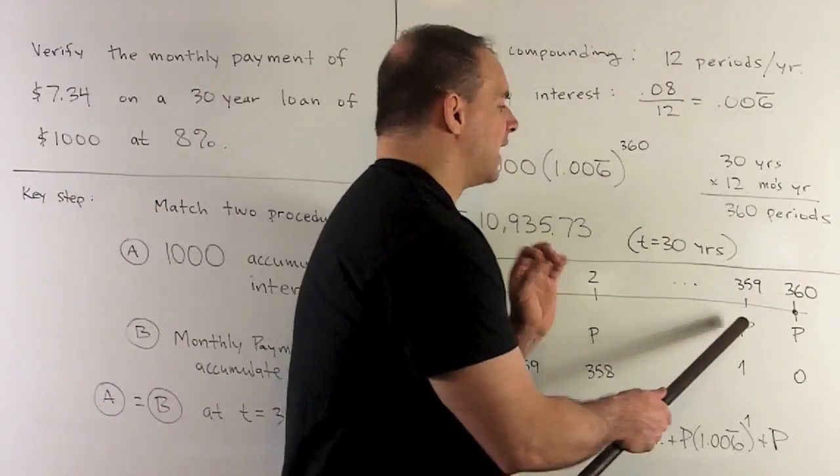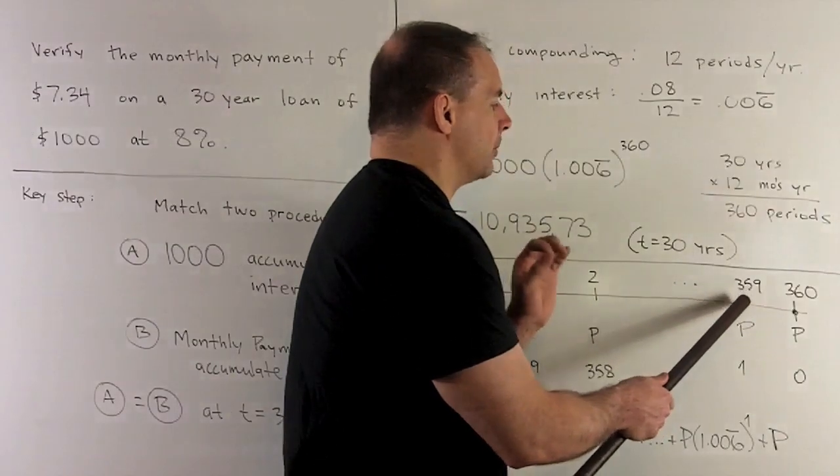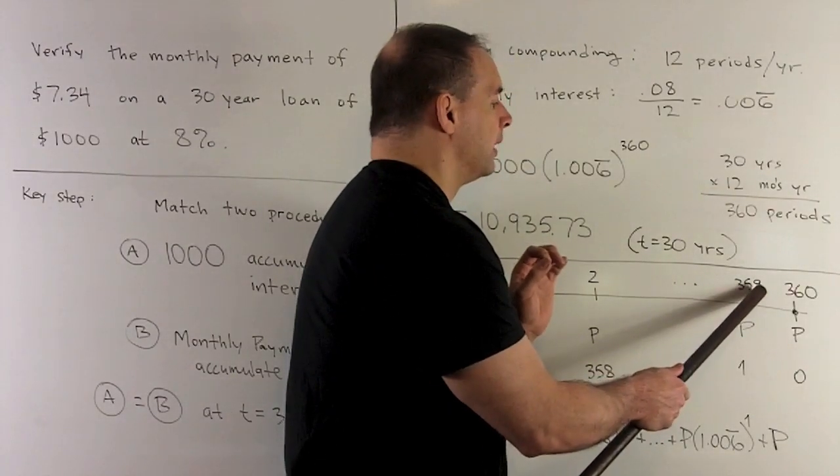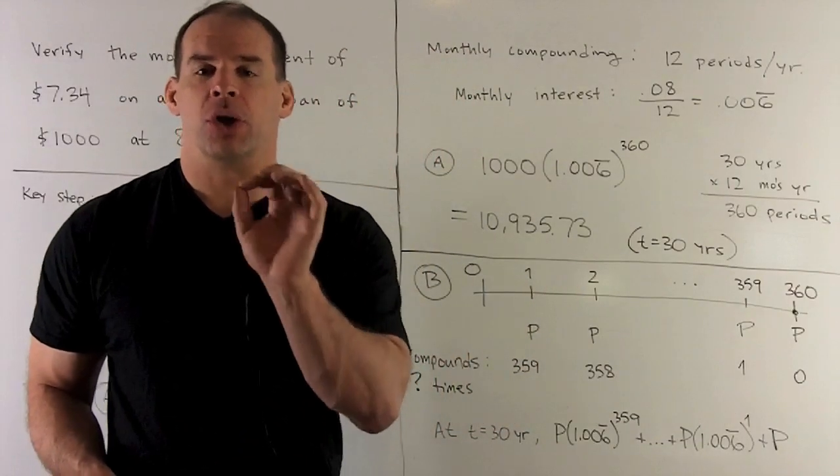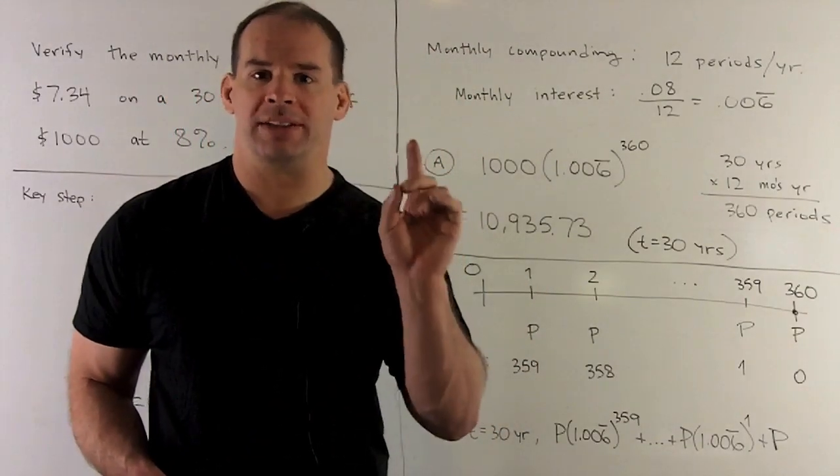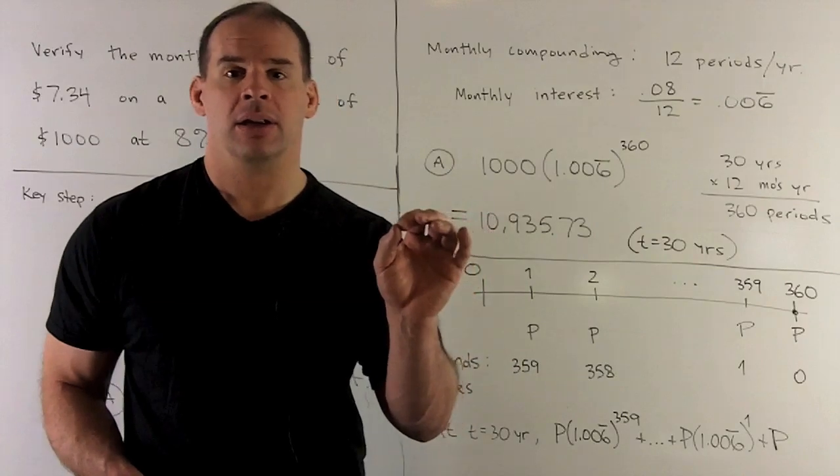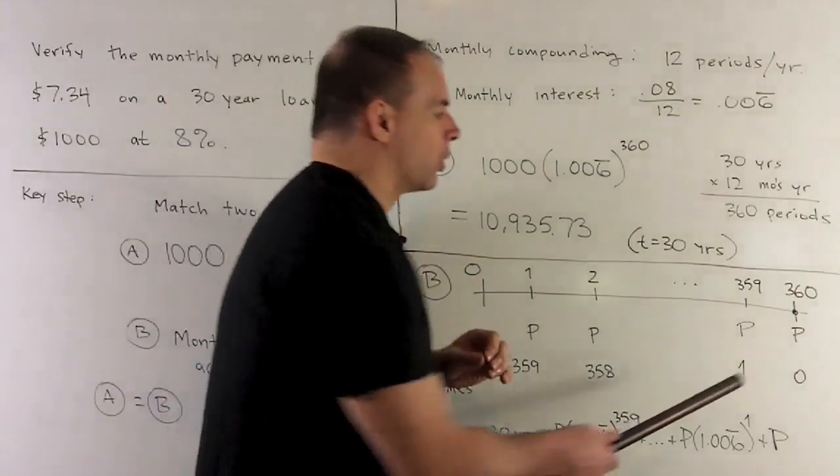For the next to last payment, that's going to be T equals 359. That's going to hit interest exactly once. It's only going to go through one month until we get to the end.